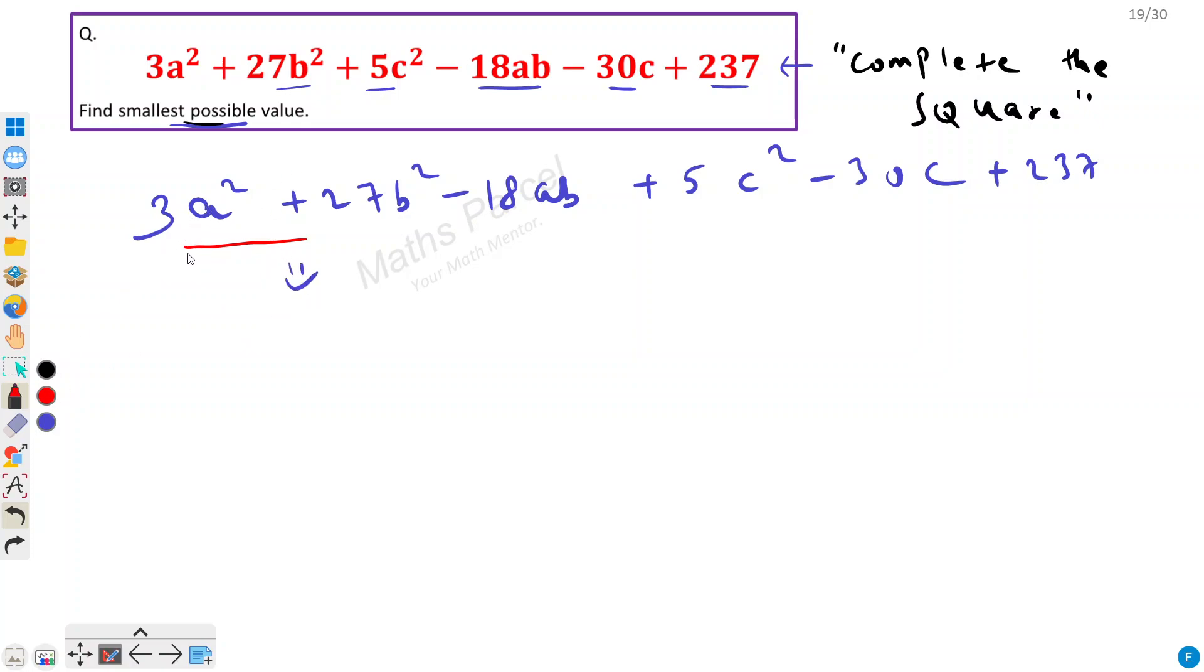If I take 3 common, so I will get a² + 9b² - 6ab, right? Now from here if I take 5 common then c² minus 6c.